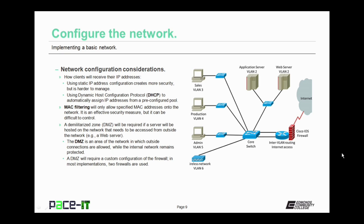Something else to consider: if a server will be hosted on the network that needs to be accessed from outside — for example, you're hosting a web server — then you're going to need a demilitarized zone, a DMZ. The DMZ is an area of the network in which outside connections are allowed, while the internal network remains protected from that outside traffic. A DMZ will require a custom configuration of the firewall. In most implementations, two firewalls are used, though it's not necessary.